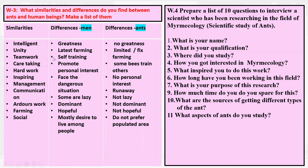Now the second column: differences. Number one — greatness. We find greatness in man but not so much in ants. Number two — farming. Man does farming and ant also does farming, but man develops and does the latest farming while ants do fixed or limited farming. Number three — self-training. Man trains himself, while in ants, some ants train others.